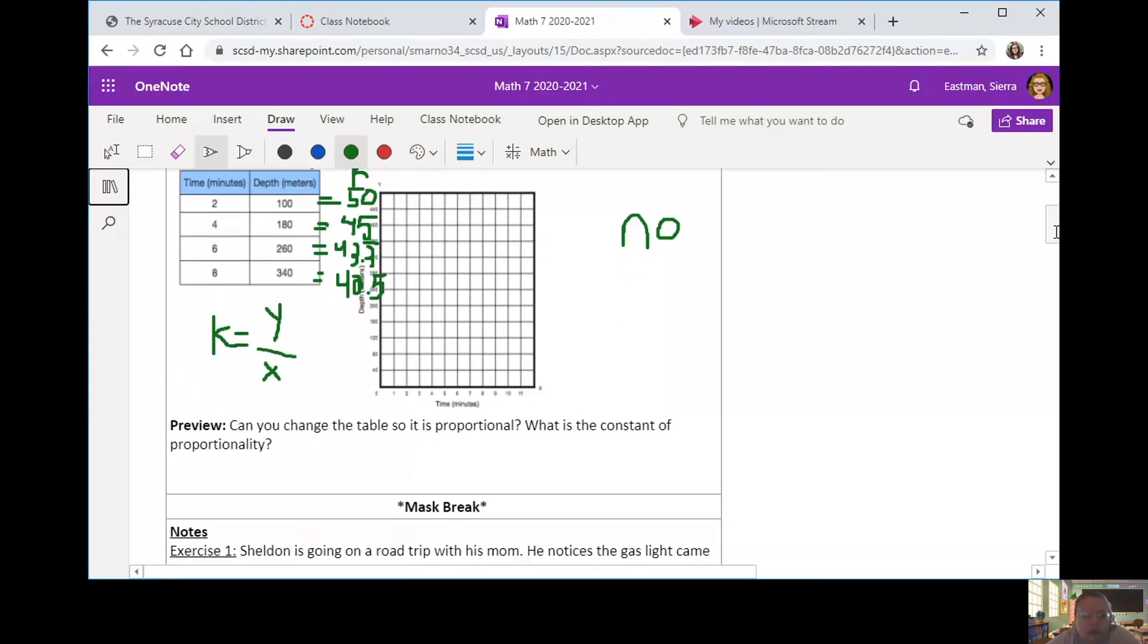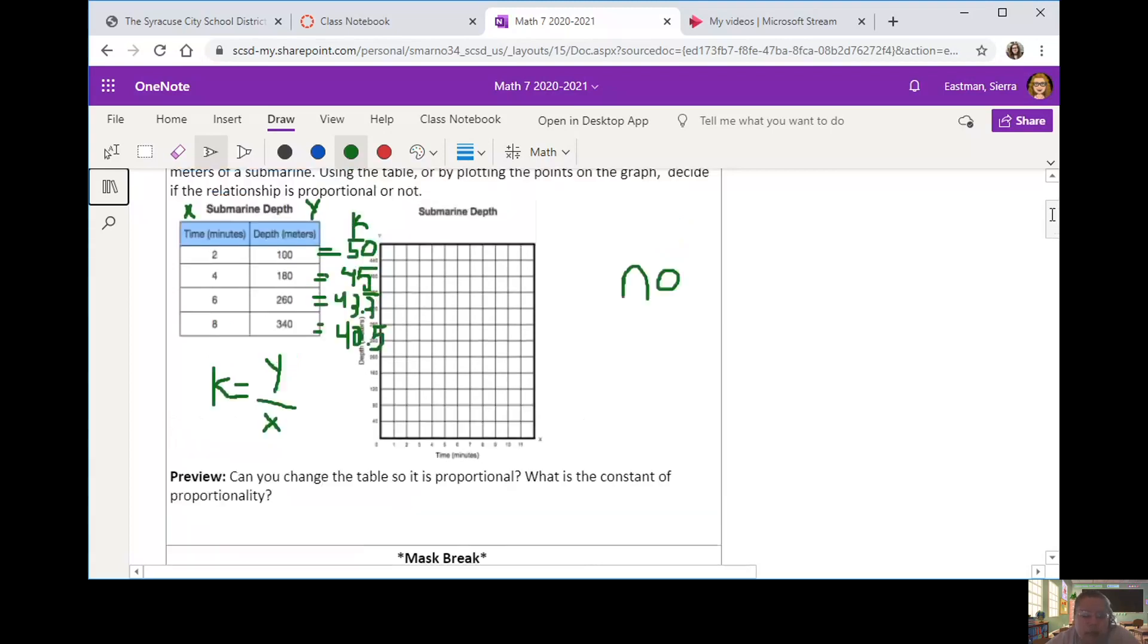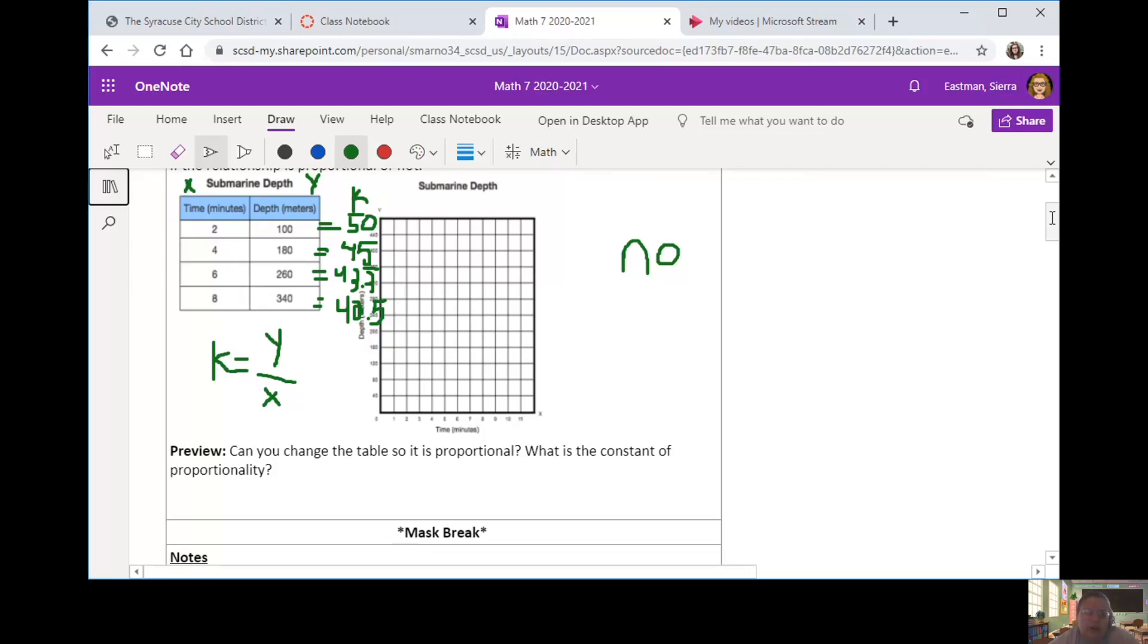And then in my preview question, they asked me, can we change the table so that it is proportional? And the answer is yes, we could kind of tweak things to change them up. If we made this a 200, then 200 divided by 4 would equal 50.